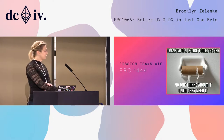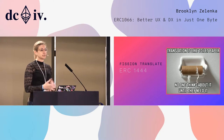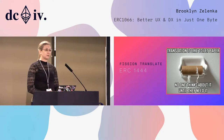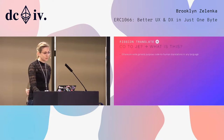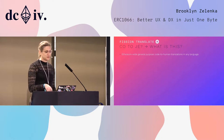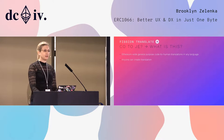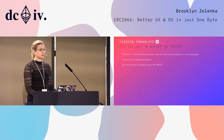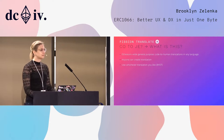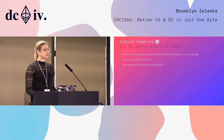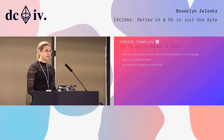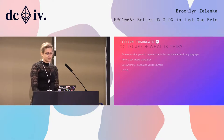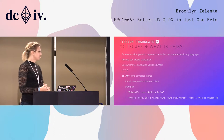I've alluded a few times to translations. Because we have one byte — 256 codes — that is a reasonable number to translate. We have Ethereum-wide general purpose code-to-human translations in any language. Anybody can create a translation and you can use whichever translation you like — it's a bring-your-own-translation situation, or you can use one of the official ones we're producing. Create your own, share them with your friends, write lists of curations — make an emoji one. It's all in UTF-8.